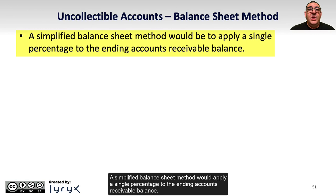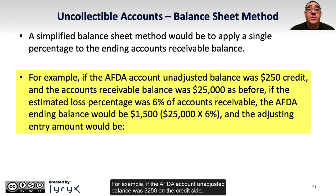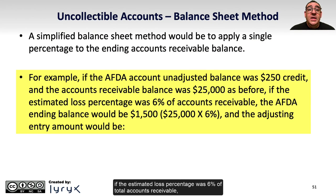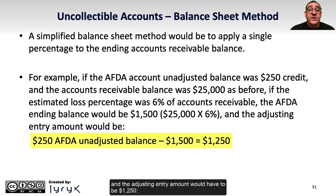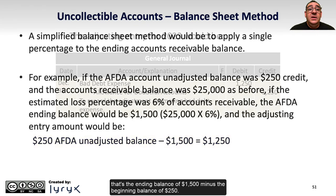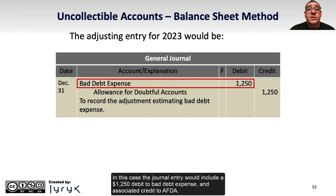A simplified balance sheet method applies a single percentage to the ending accounts receivable balance. For example, if the AFDA unadjusted balance was $250 credit and the accounts receivable balance was $25,000, with an estimated loss percentage of 6%, the ending AFDA balance would be $1,500 ($25,000 times 6%). The adjusting entry amount would be $1,250 — the ending balance of $1,500 minus the beginning balance of $250 — recorded as a debit to bad debt expense and credit to AFDA.